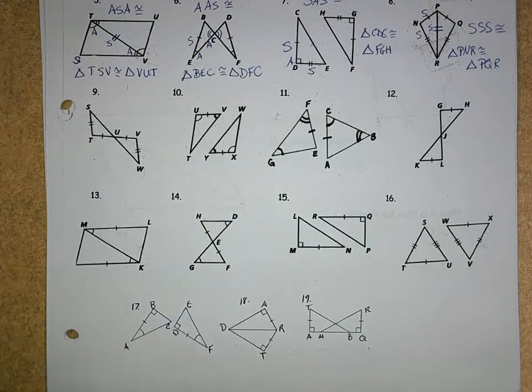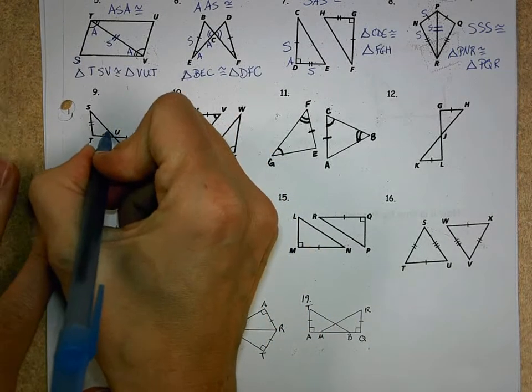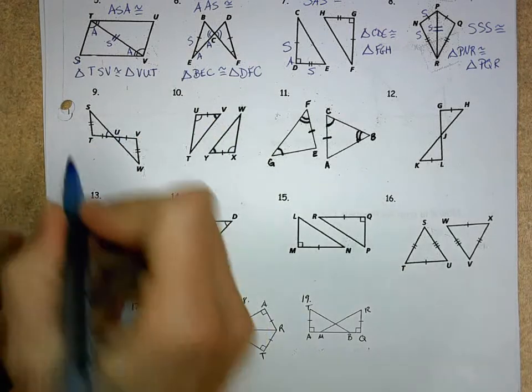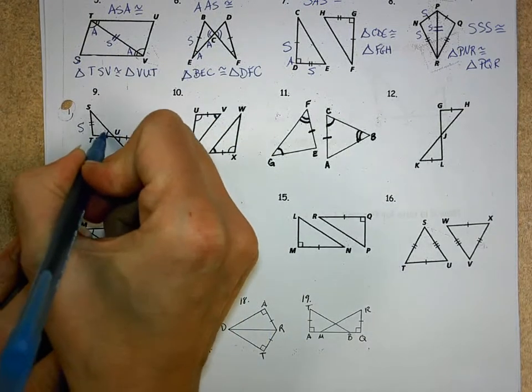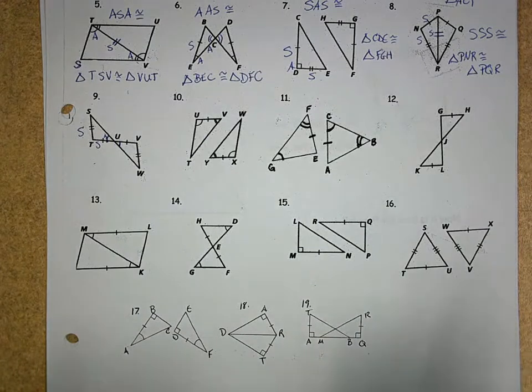Now, looking at number 9, you should always look to see if there's something that can be assumed congruent. In this case, it would be the vertical angles, but notice the location, it's side, side, angle. The angle is not in the right spot.